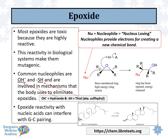For example, squalene — which gets converted to cholesterol — has an epoxide ring, and that epoxide ring gets converted to a hydroxide group. Epoxide reactivity within nucleic acid pairing is also very important. Guanine-to-cytosine pairing, which is the pairing of nucleotides in DNA, can be altered, affecting appropriate amino acid production and basically altering the way proteins are formed.